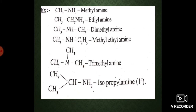In the fifth structure, three methyl groups are attached around the nitrogen atom, so it is called trimethyl amine. Where isopropyl is added to ammonia, it is called isopropyl amine or primary amine, because the nitrogen atom is bonded to the primary carbon.